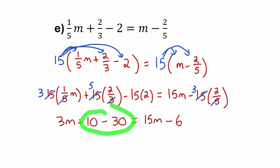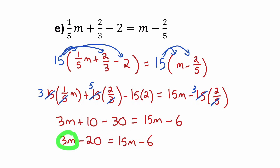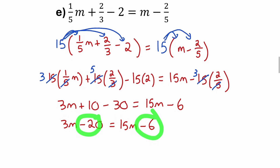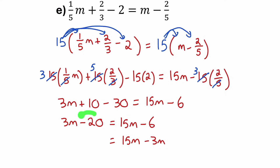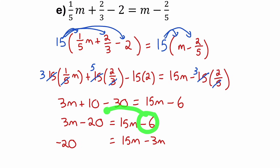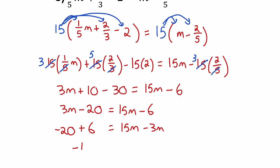Now I'll get my variable terms to the right side and my constant terms to the left. On the right, I'll leave the 15M and bring over this 3M, making it a negative 3M. On the left, I'll have my constant terms: negative 20, and then bring over this negative 6, making it a plus 6. So I have negative 14 equals 12M.